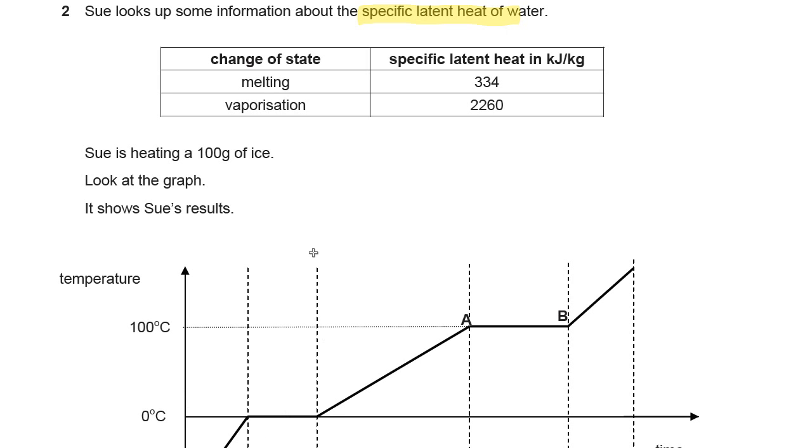Here you've got the information. The change of state of water melting from a solid to a liquid takes 334 kJ per kilogram, and vaporization from a liquid to a gas takes 2260 kJ per kilogram. This is some useful data here.